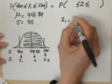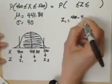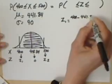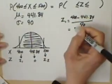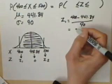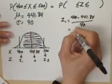Z1 is equal to 400 minus 441.84 divided by 90, which gets to be negative 0.4649. But I'm going to round that off to negative 0.46.